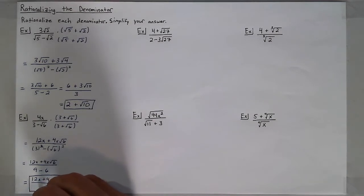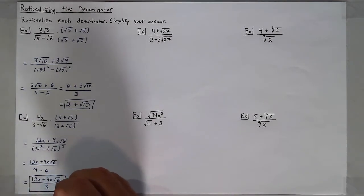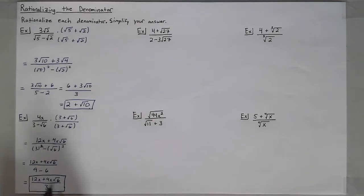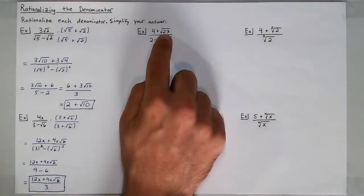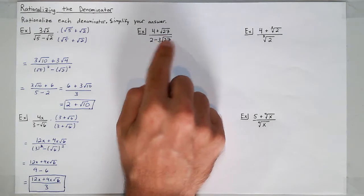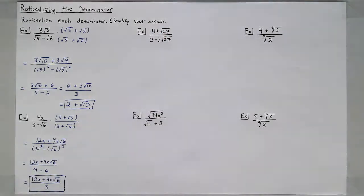Now be very careful: I know that 6 is divisible by 3, but it's underneath a radical, so we wouldn't actually be able to combine those two numbers. Next we have 4 plus the square root of 27 in the numerator. The square root of 27 can be simplified, so we're going to do that before we start.